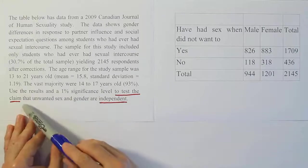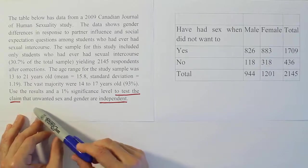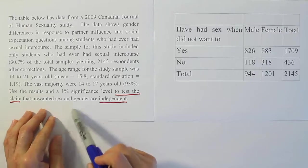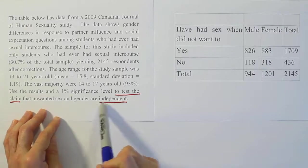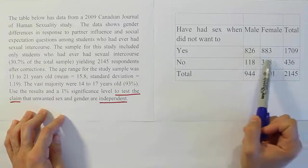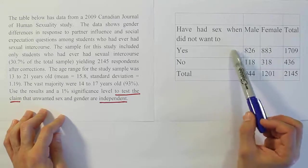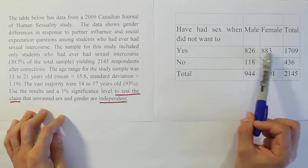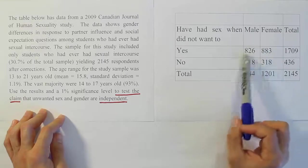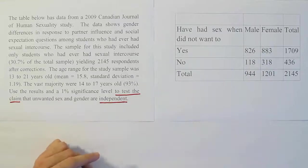I've underlined the phrase to test the claim so we can see clearly it's a hypothesis test they want us to do. They ask us to test these two categories to see if they are independent. That reminds me of the chi-squared test for independence. When I look at the data, I see it's a perfect fit. We have a question being asked and we have the cell counts for the response. It's categorical data and clearly a chi-squared test for independence.